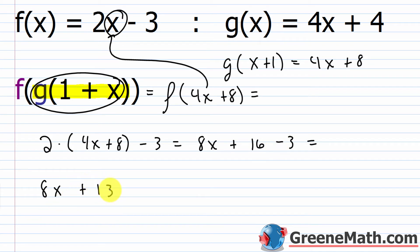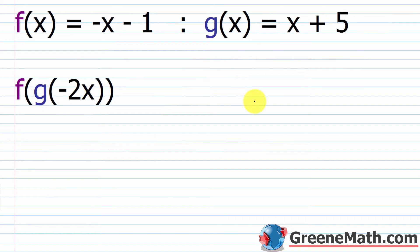So the result here: f of g of 1 plus x is equal to 8x plus 13. Nothing really super complicated — it's just a lot of substituting and simplifying. For the next example, we have f of x equals negative x minus 1, g of x equals x plus 5, and we want to find f of g of negative 2x.